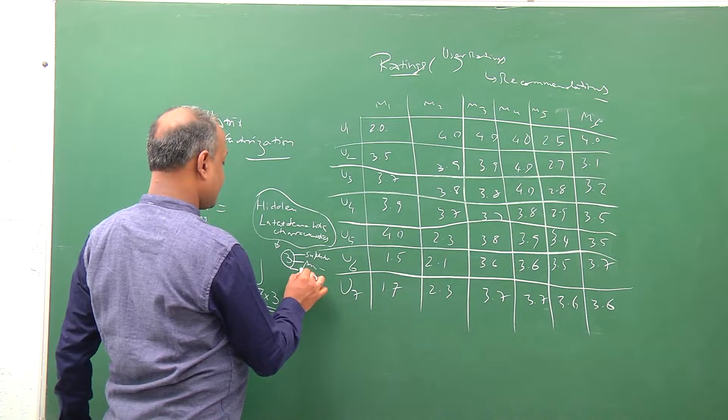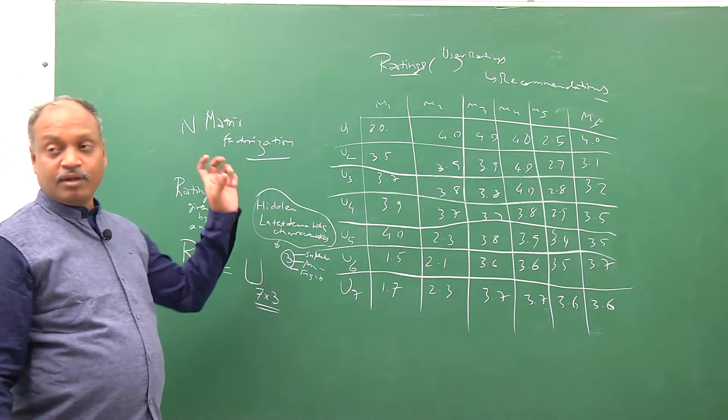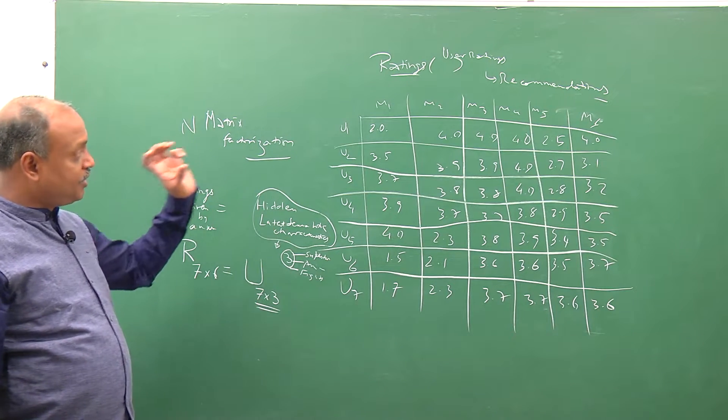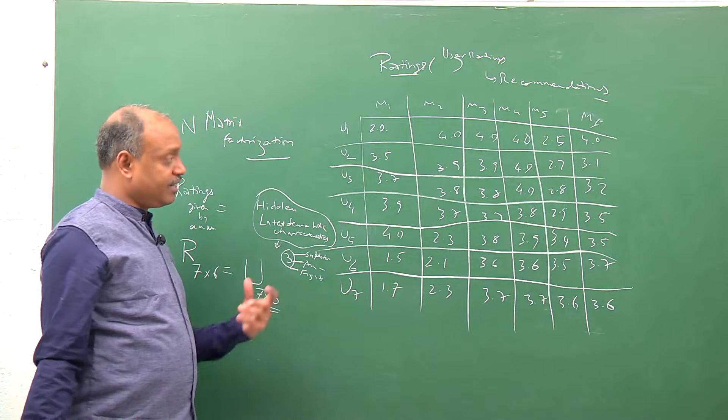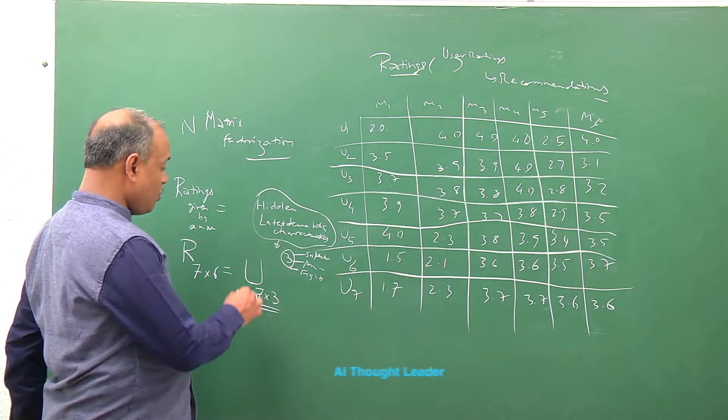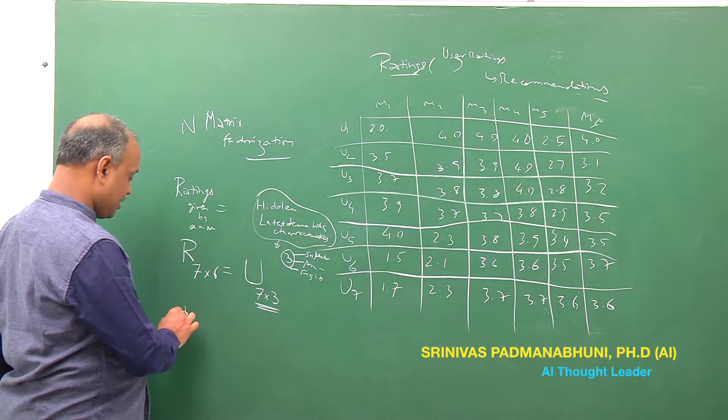So there are three different characteristics of the movie which is making them react based on the condition which they would give the ratings. The U matrix, which is a 7 by 3 matrix, actually gives the potential for each user to like the corresponding characteristics.